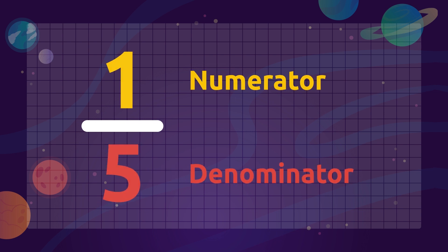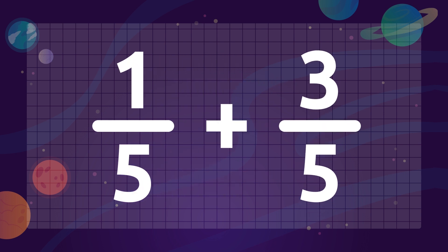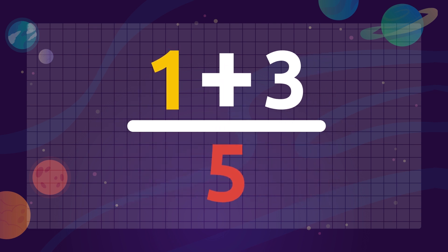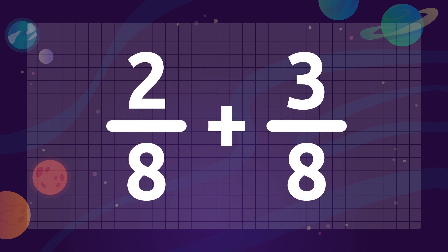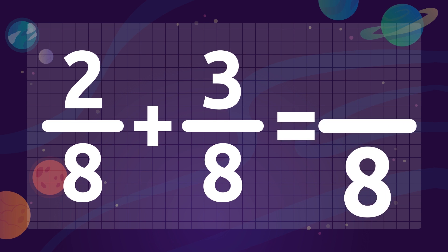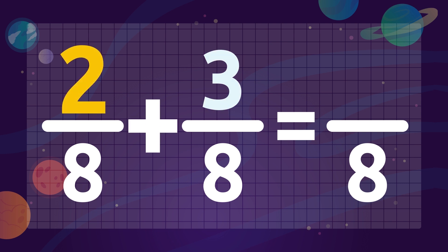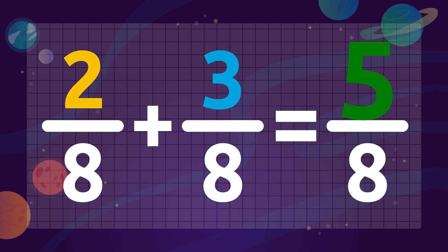Today we're going to take one step further and learn how to add fractions. To add fractions with the same denominator, we leave the common denominator and add the numerators. It's very simple! Let's see an example: to add 2 over 8 plus 3 over 8, we leave the common denominator — in this case, the number 8 — and we add the numerators, that is 2 plus 3, which equals 5.